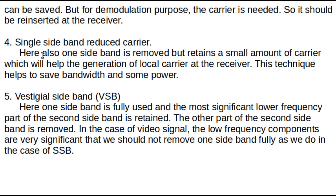The fourth type is Single Sideband Reduced Carrier. Here we send only one sideband, but the carrier is not fully removed — a small portion of carrier power is transmitted. That small carrier helps us to know the carrier frequency at the receiver side, since a carrier is always required for demodulation. Using a local oscillator at the receiver side, we can easily recover the carrier frequency from this small transmitted portion.